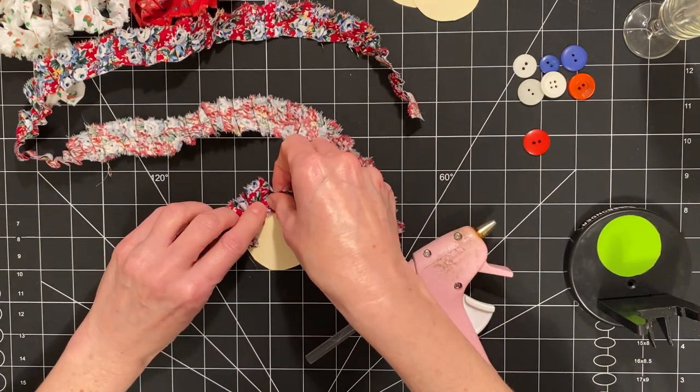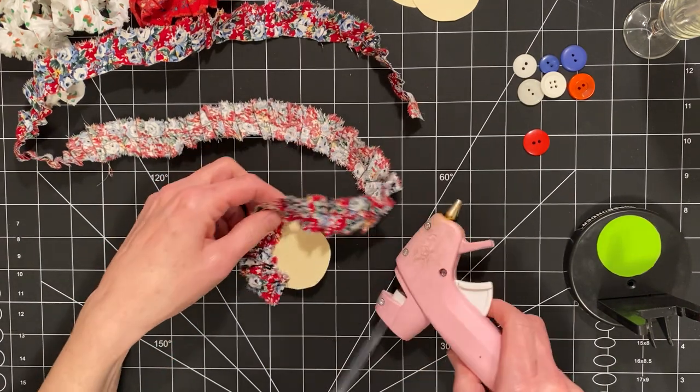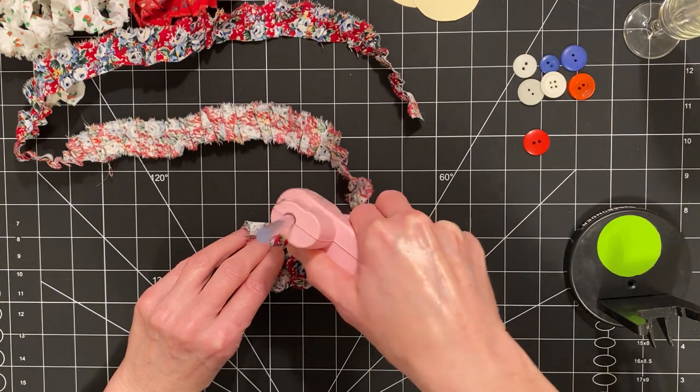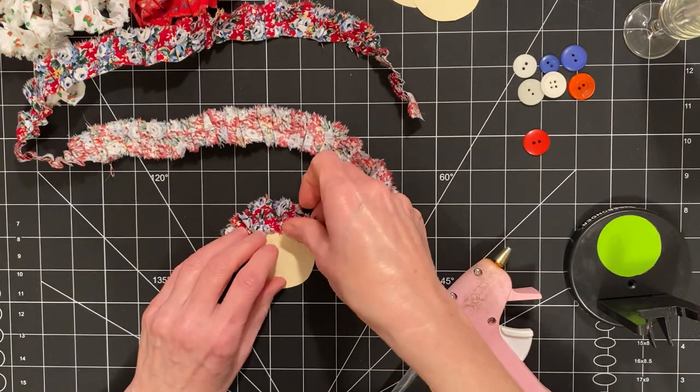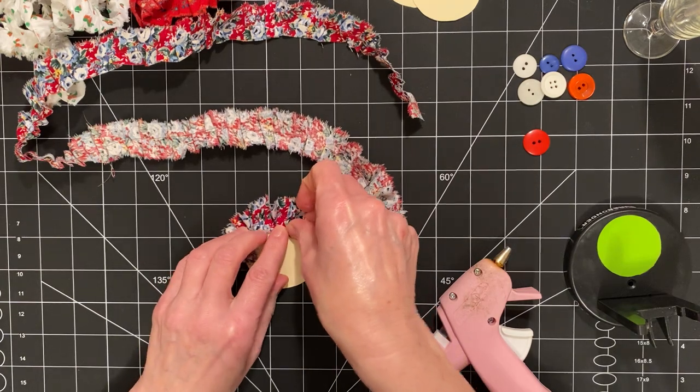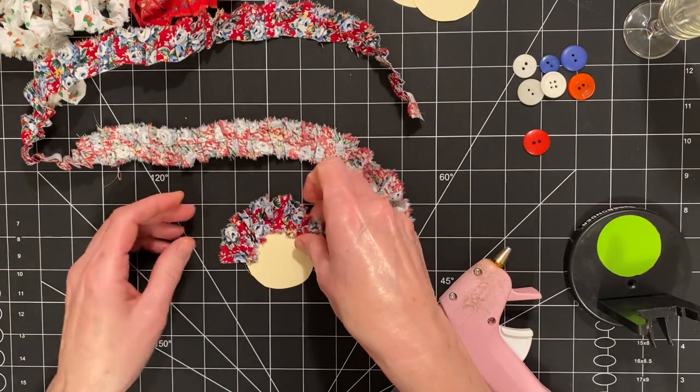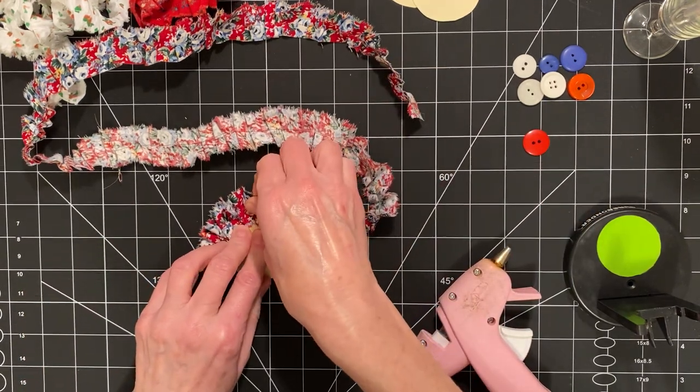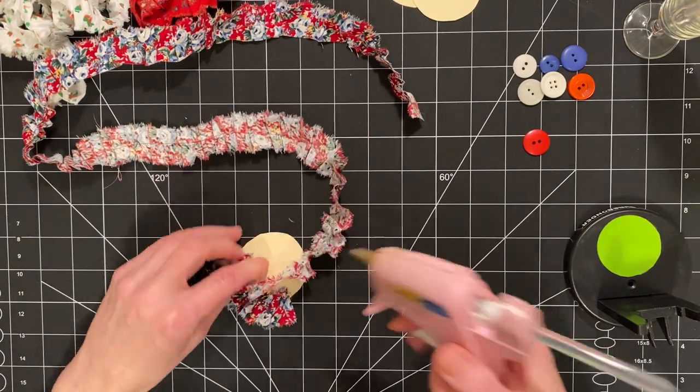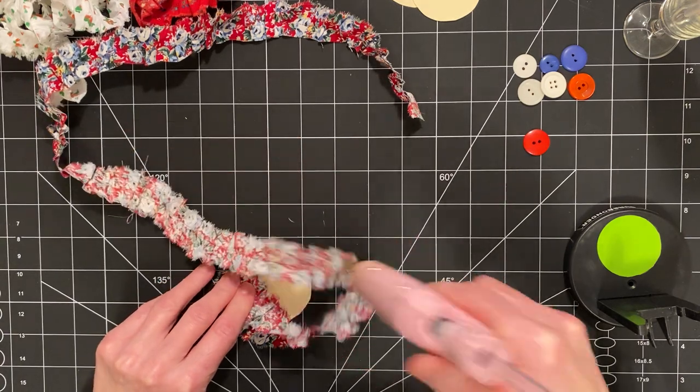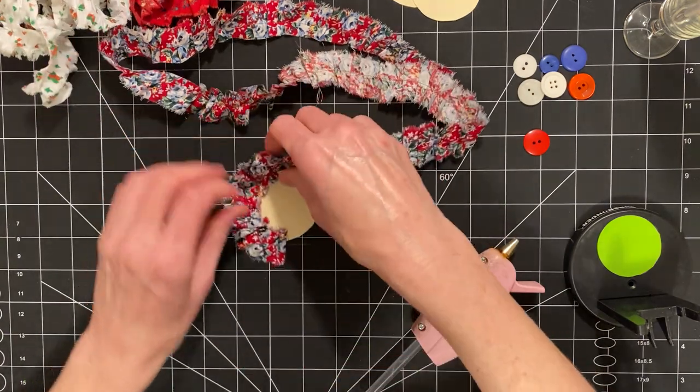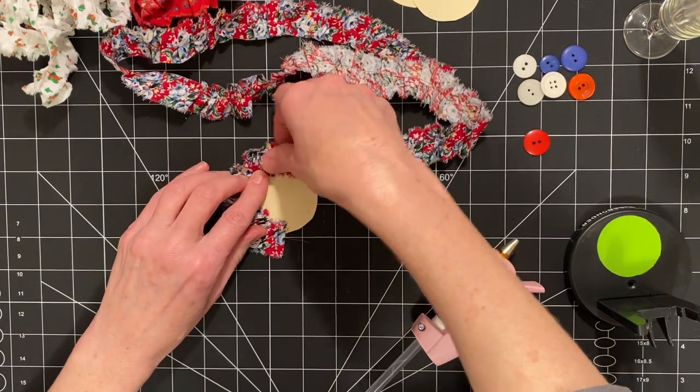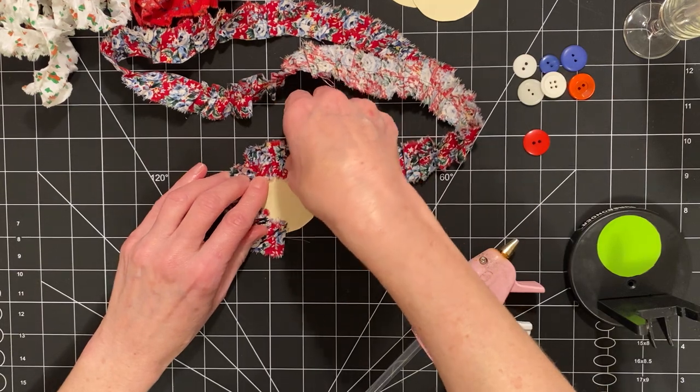So I'm just going to go around, and even though I ruffled it up, as I put glue down, I'm still just kind of scrunching it together because I want it to be nice and full. And I don't know, I might run out of fabric before I get to the end of the flower.